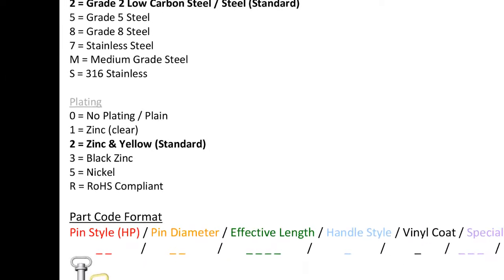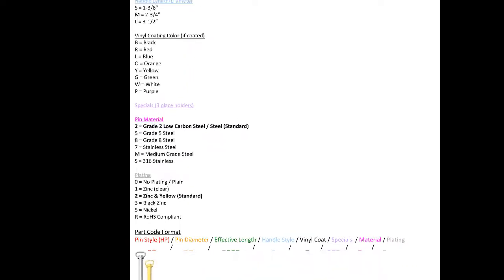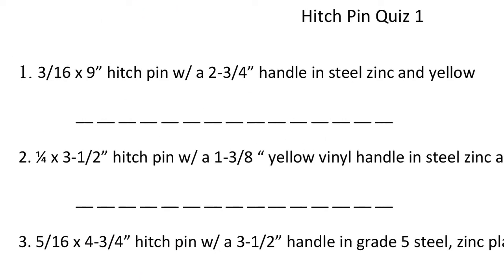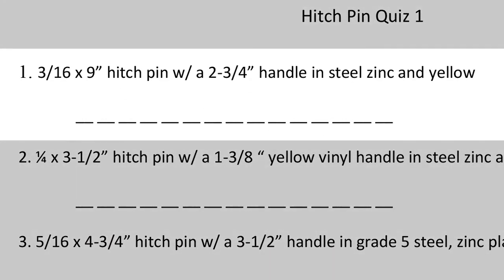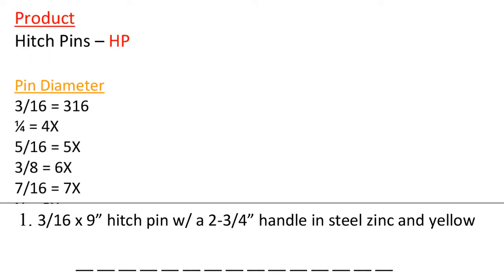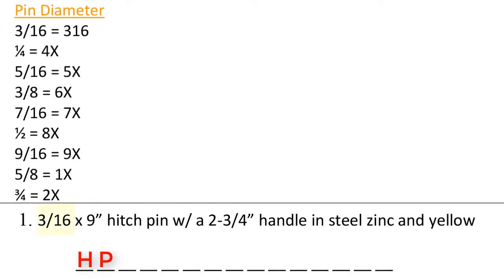Now that we know how to use the part code guide, let's move on to the practice quiz and put it to use. Hitch pin quiz number 1: 3/16 by 9 hitch pin with a 2 and 3/4 handle in steel, zinc, and yellow. To start, the part code guide shows we need to use HP for this product category. The diameter is 3/16, so we would enter 316.